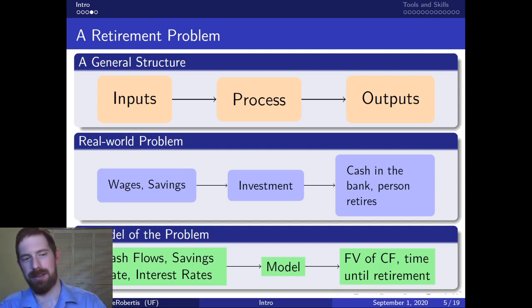Certainly the cash flows they're getting from their wages we can measure that. We can think about how much they're saving in terms of a savings rate of what percentage of their wages are they saving in each year. And as an input into the investment process we can think about the interest rates that this person is going to earn on their investments.